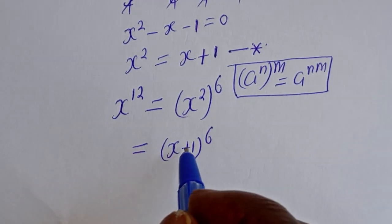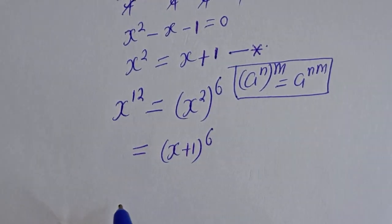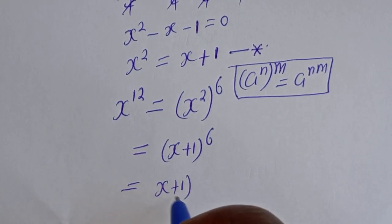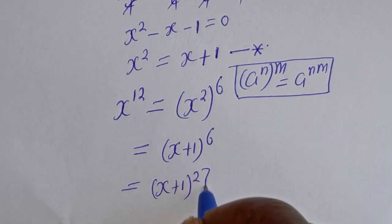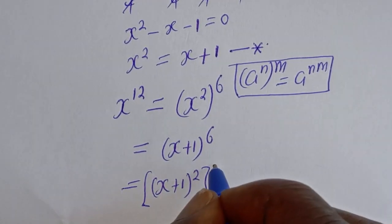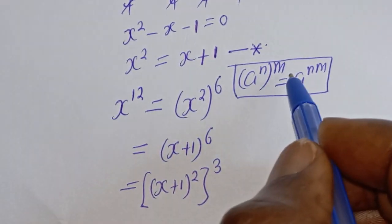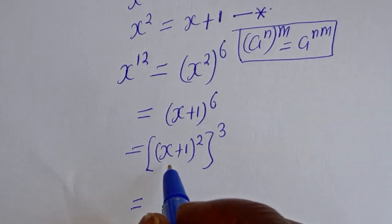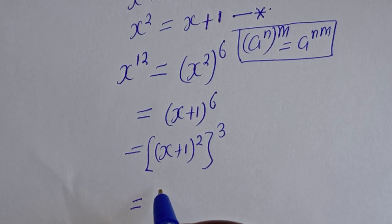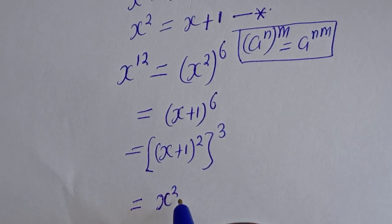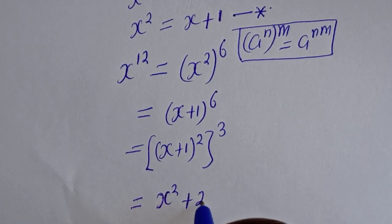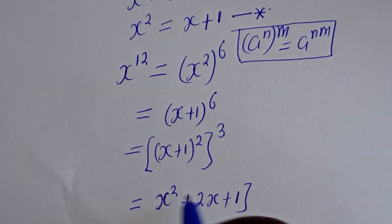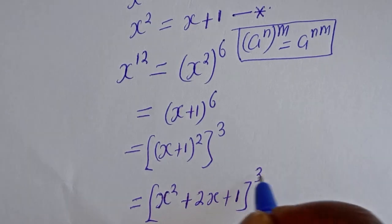(x plus 1) to the power of 6 can be written as ((x plus 1) squared) to the power of 3, using the same exponent rule. And (x plus 1) squared expands to x squared plus 2x plus 1 to the power of 3.